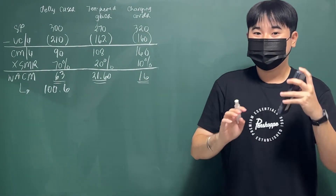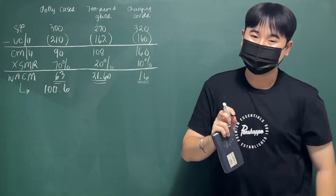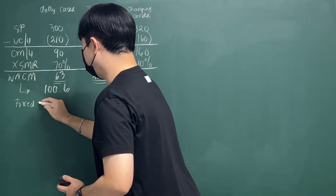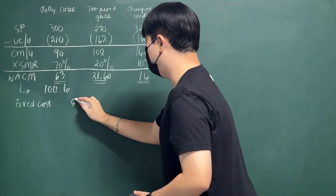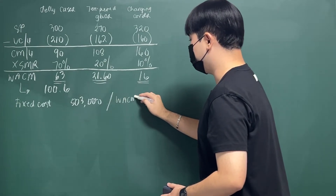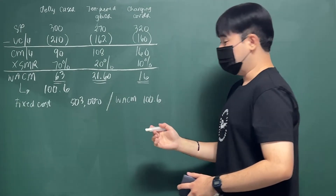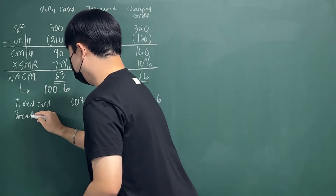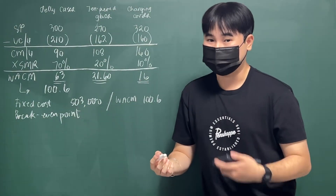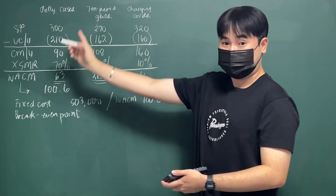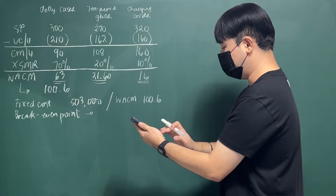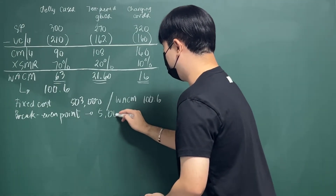From here, you apply the CVP formula: fixed cost divided by weighted average contribution margin. The fixed cost in the problem is 503,000 divided by the weighted average contribution margin of 100.6. This gives you the break-even point. So 503,000 divided by 100.6 equals 5,000 units total.